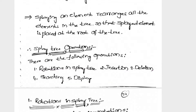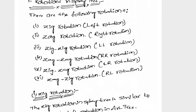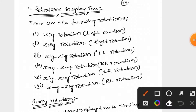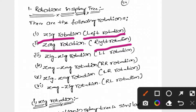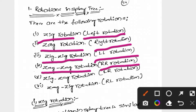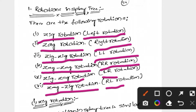We need to perform rotations. There are six types of rotations: zig rotation, zag rotation, zig-zig rotation (left-left rotation), zag-zag rotation (right-right rotation), and double rotations including LR and RL. These six types of rotations are used in the Splay tree.